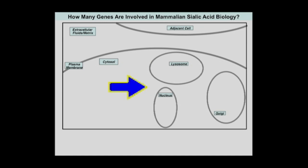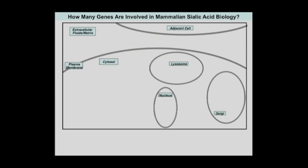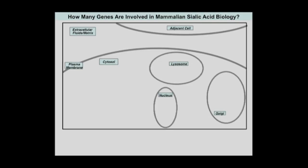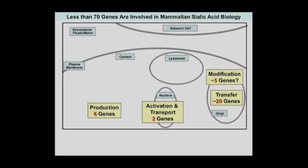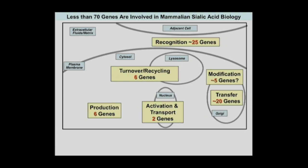If this were a cell with all its different parts — the nucleus, the Golgi, the lysosome, the adjacent cell, and the plasma membrane — how many genes are involved in all of mammalian sialic acid biology? We went through this after the chimpanzee genome and found a very complicated picture with lots of different genes. I can simplify it by saying there are six genes involved in producing sialic acids, two in activation and transport, 20 to transfer them, five to modify them, 25 to recognize them, and six to turn over and recycle them — less than 70 genes total.